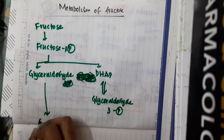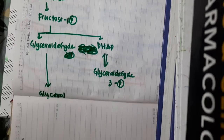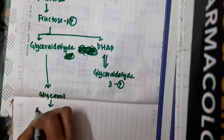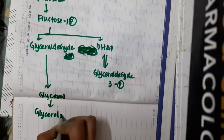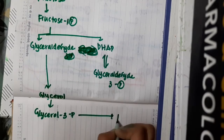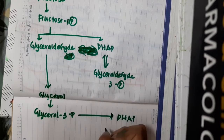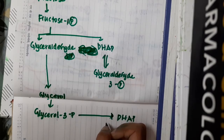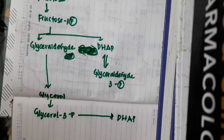Glyceraldehyde in the presence of alcohol dehydrogenase forms glycerol. This glycerol in the presence of glycerol kinase forms glycerol-3-phosphate, which again forms dihydroxyacetone phosphate.